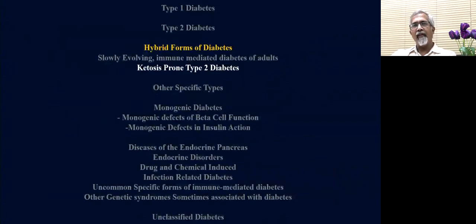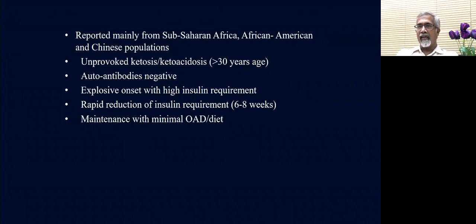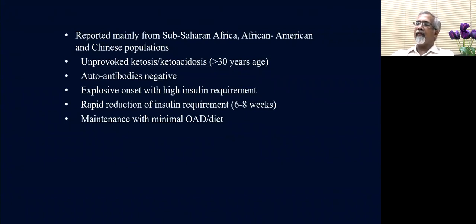The second form of hybrid diabetes is ketosis-prone type 2 diabetes. This is largely reported from populations across Africa, African-American populations in the United States, and Chinese populations; until more recently it was not commonly reported from South Asia. These patients have unprovoked ketoacidosis, are generally more than 30 years of age — though in India they could be younger. Autoantibodies are negative and they have an explosive onset with a high insulin requirement, but rapid reduction of insulin requirement is seen; within about three months, none require insulin and can be maintained with oral anti-diabetic agents.